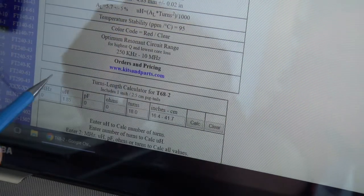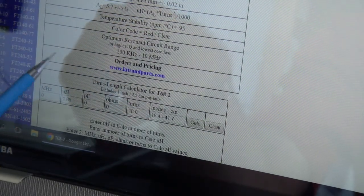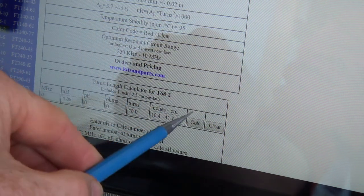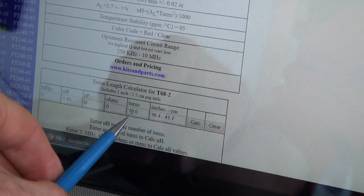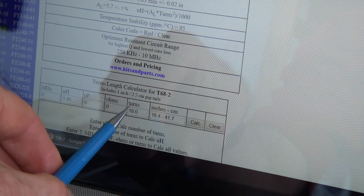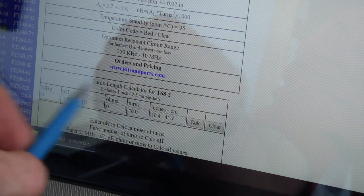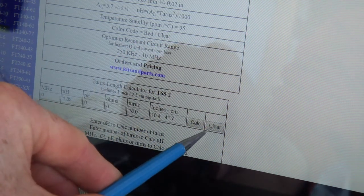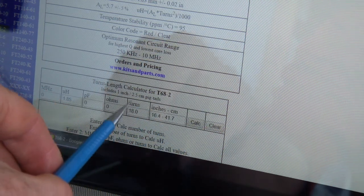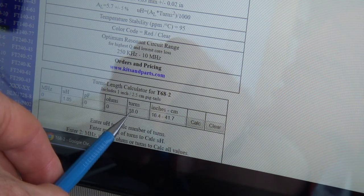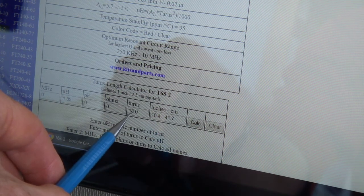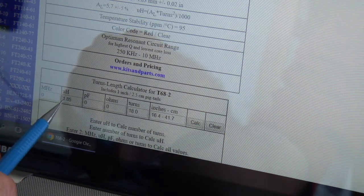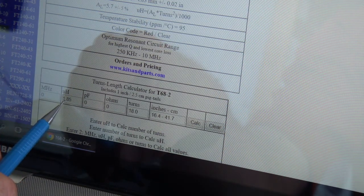So for example, and what I've done here is, we came out with 1.989 microhenries. I can type that into here, then go calculate, and it will tell me how many turns I require. In this particular case, when I reversed it, it came out with 18.7 turns. So what I've done now is I've cleared that and gone the other way around. I've now said, well, what would 18 turns give me? So I can type in 18 turns, calculate, and it gives me, for a T68-2, 1.85 microhenries.